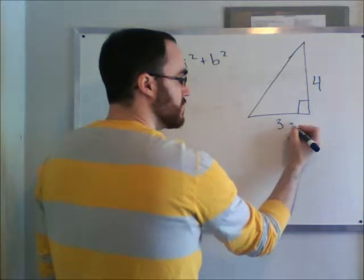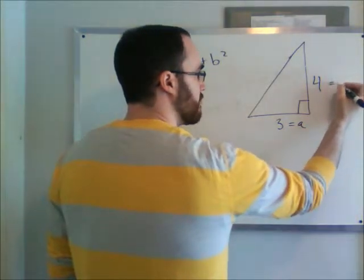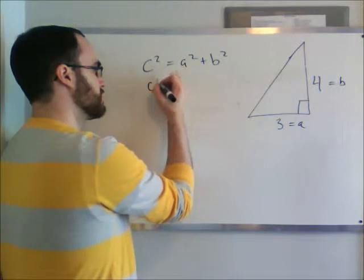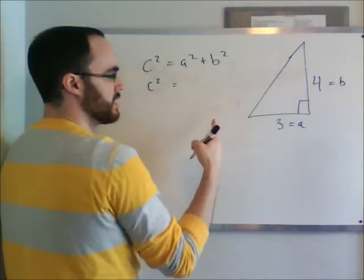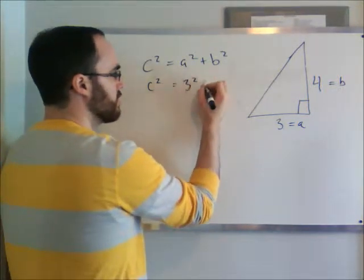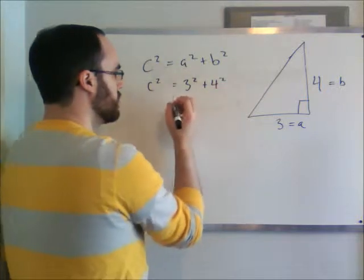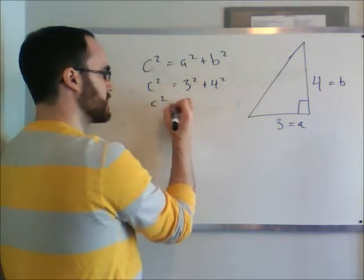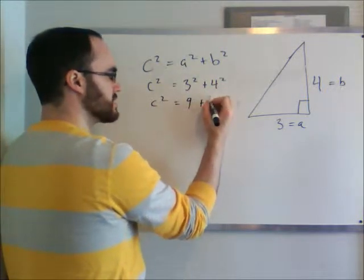So three equals a and four equals b. If I replace this equation by saying c squared equals three squared plus four squared, we can continue with that. So c squared equals nine plus 16.